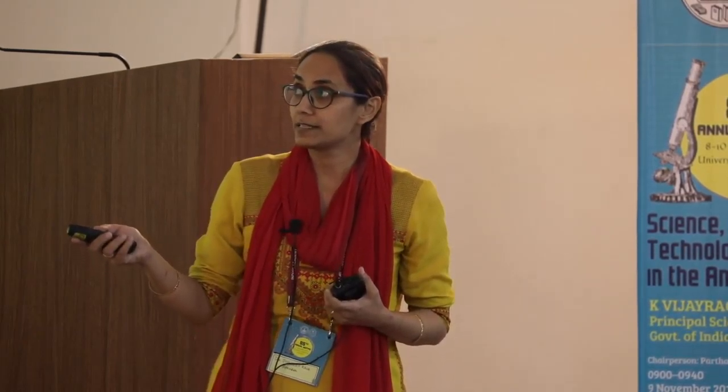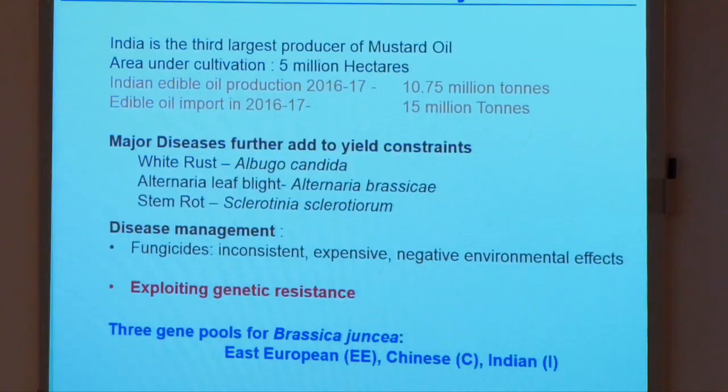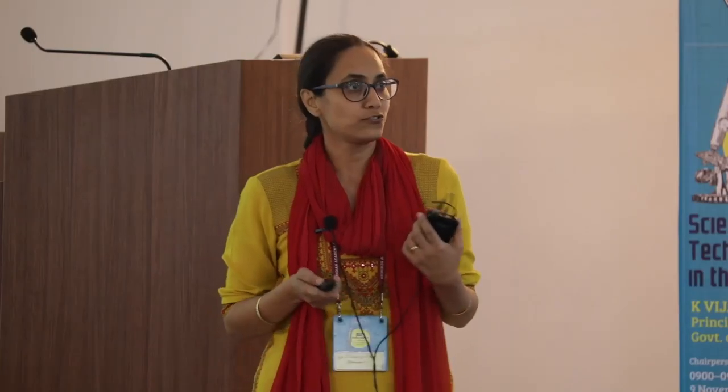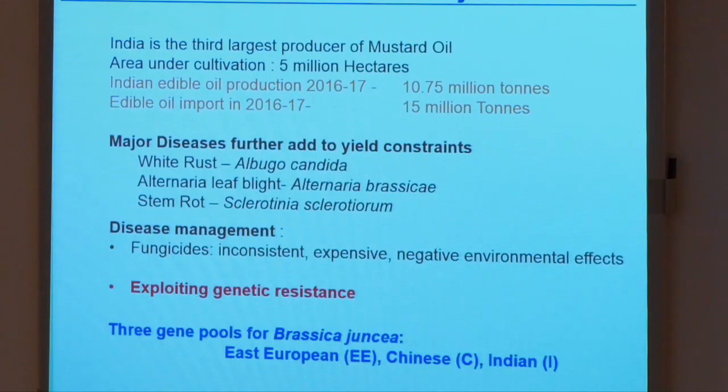As the title says, we have worked on disease resistance in mustard. Oilseed mustard is one of the most important oilseed crops of India. India is the third largest producer of mustard oil, and in India we have about 5 million hectares of land under cultivation for mustard. Still, we have a huge deficit of edible oil in India.